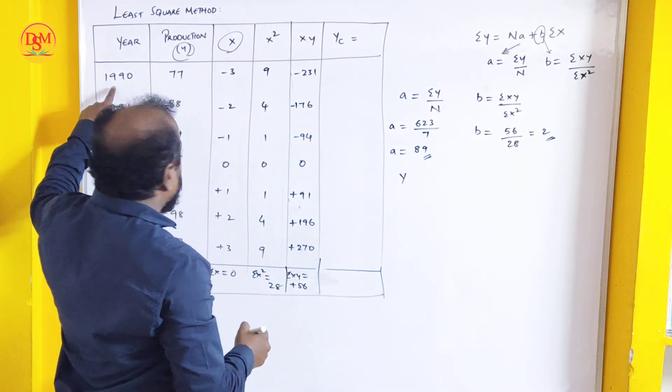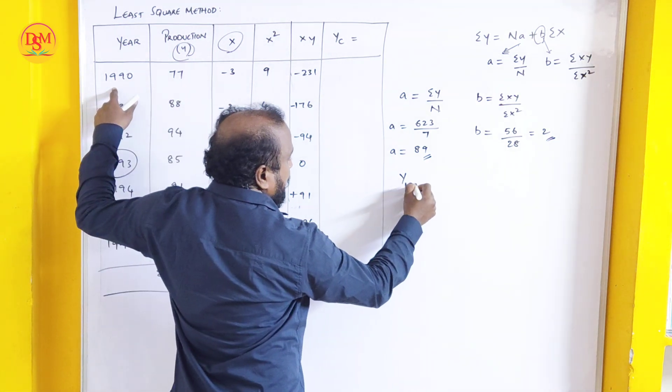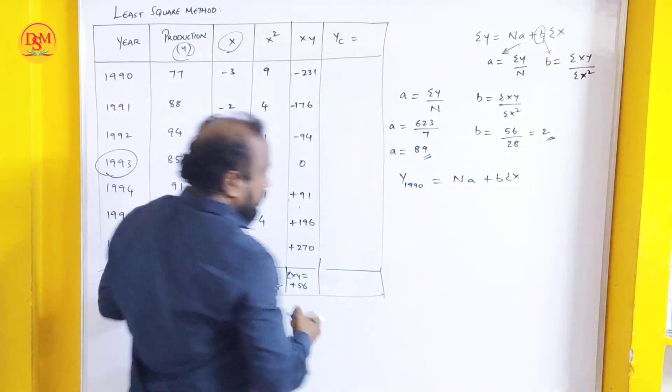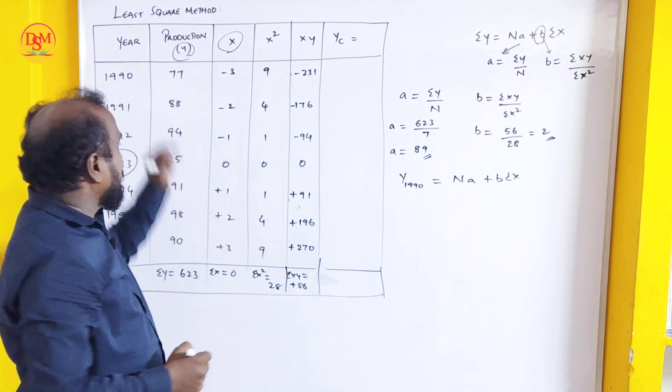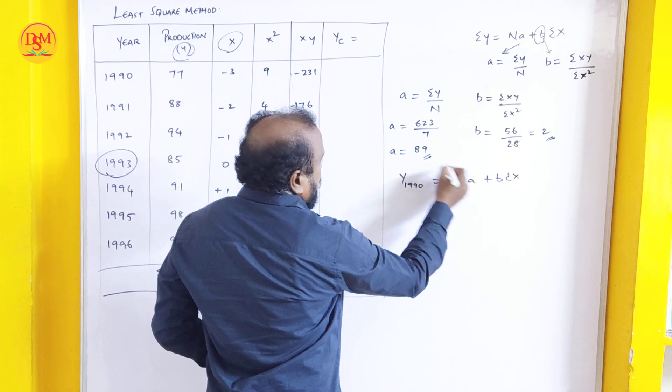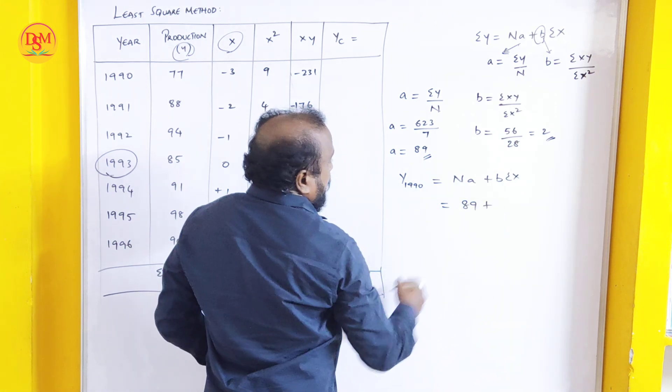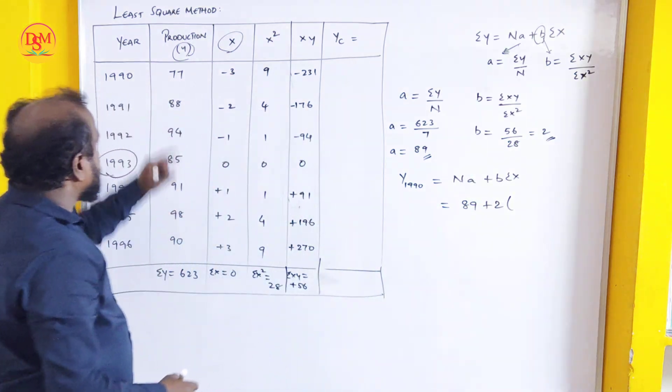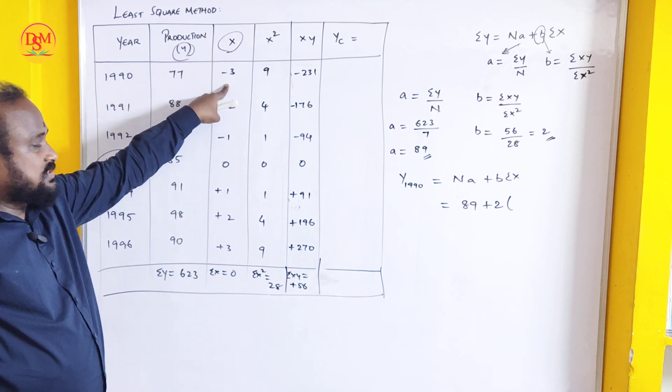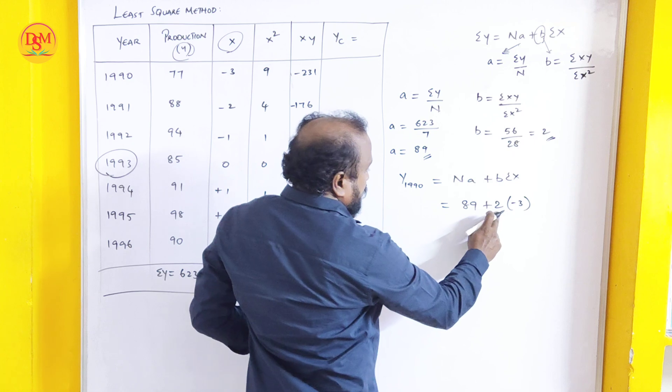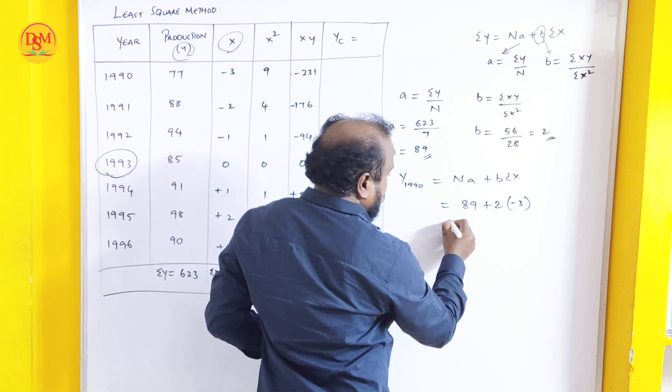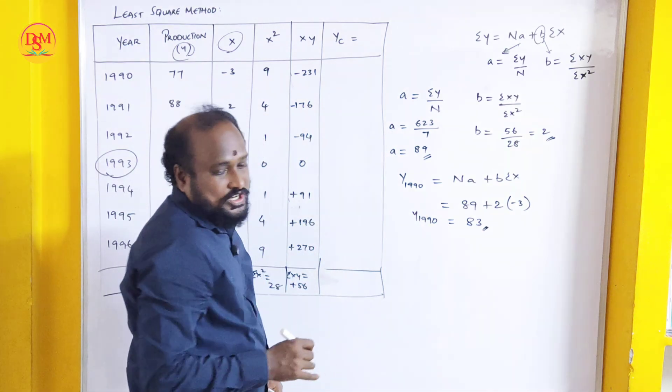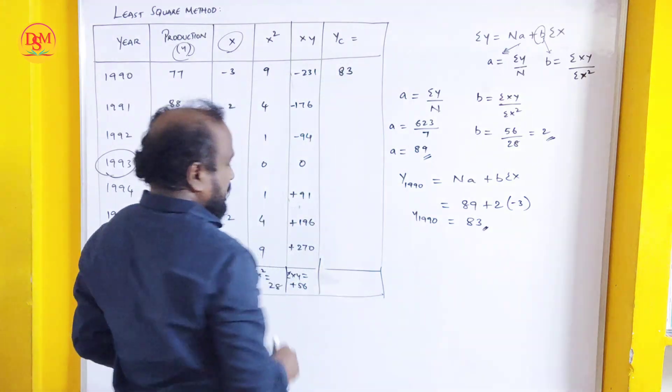Year trend for the year 1990. We will find out the year trend. In A plus B of sigma x, substitute in the formula. A is 89 plus b value is 2 and sigma x for 1990 is minus 3. 2 into 3 is 6. 89 minus 6 is 83. For the year 1990 the value is 83. You have to write in this trend 83.